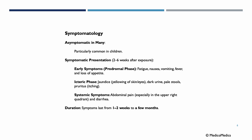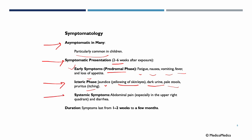Regarding symptomatology, it can be asymptomatic in many, particularly common in children. If symptomatic, presentation usually occurs two to six weeks after exposure. Early symptoms — the prodromal phase — include fatigue, nausea, vomiting, fever, and loss of appetite. The icteric phase features jaundice (yellowing of skin and eyes), dark urine, pale stools, and itching. Systemic symptoms include abdominal pain, especially in the upper right quadrant, and diarrhea. Symptoms typically last one to two weeks, up to a few months.